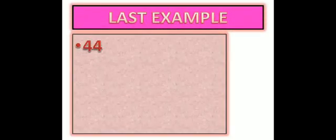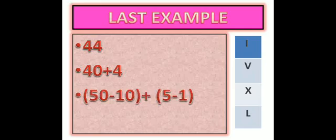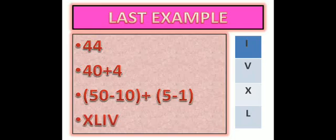Last example: 44. Again write all four symbols on the right side of your notebook, to remind you that we cannot write any symbol other than these four. 44 can be written as 40 plus 4. 40 is 50 minus 10 — we cannot write 10 plus 10 plus 10 plus 10 because any symbol cannot be repeated more than 3 times. So 40 is 50 minus 10, meaning X is written to the left of L. And 4 is 5 minus 1, meaning I is written to the left of V. Adding them together, the symbol for 44 is XLIV.